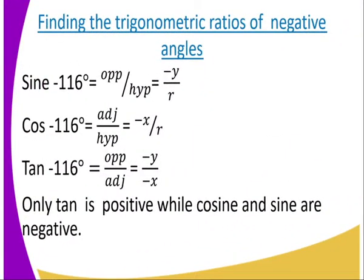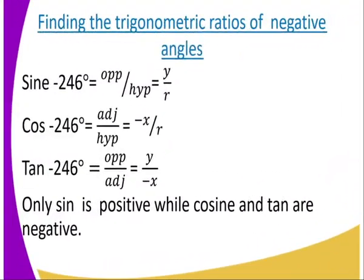For negative 116 degrees: sine is negative y divided by r; cos(negative 116°) is negative x divided by r; and tan(negative 116°) is negative y divided by negative x, making tangent positive while cosine and sine are negative — these are the third quadrant properties. For negative 246 degrees: sine is y divided by r, cosine is negative x divided by r, and tan is y divided by negative x. Here only sine is positive, while cosine and tangent are negative — the second quadrant properties.